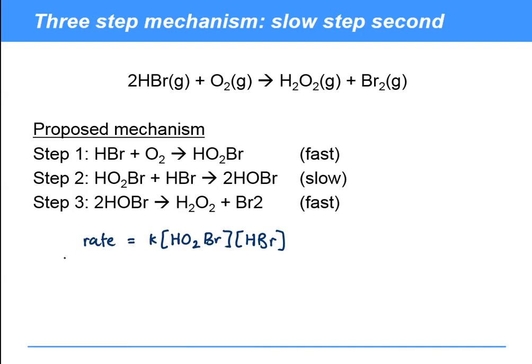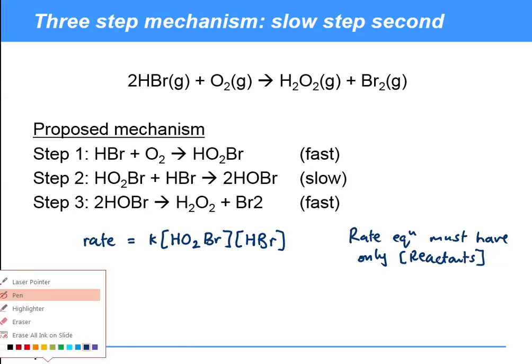It's because the rate equation must contain only reactants. What we've got here is actually an intermediate creeping in. This HO2Br is not a reactant, it's an intermediate. So what we need to do if we want to determine the rate equation is to think carefully about where that intermediate actually came from.